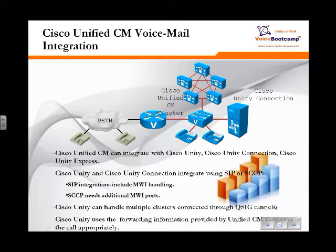You can integrate Unity Connection with Call Manager using either SIP or Skinny protocol. When you do a SIP integration, your MWI information is handled within the SIP messages. Whereas in Skinny, you need to create additional MWI ports to provide proper message waiting indicator. Cisco Unity Connection can handle multiple clusters connected through QSIG and can also provide forwarding information to the Call Manager properly.